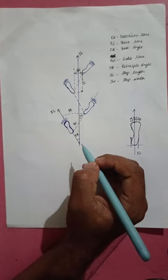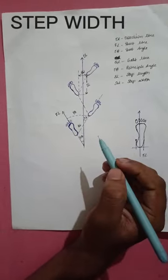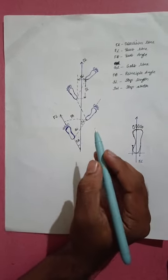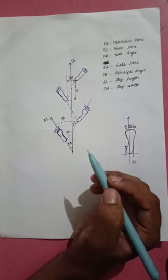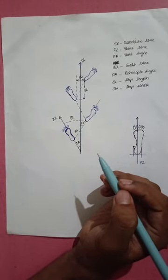After drawing the foot line, we have to draw step width. This is the distance between the parallels drawn in the direction of the direction line, touching the inner side of the right and left foot.